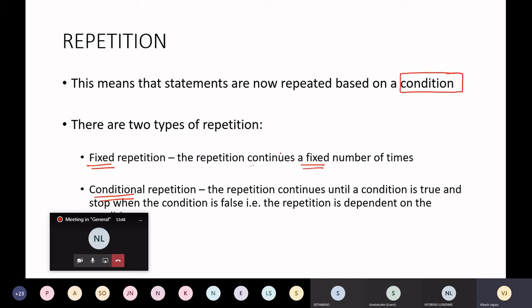In other words, it will repeat 10 times, it'll repeat three times, it'll repeat five times. Conditional repetition—you don't know how many times it's going to repeat. It just depends on when the condition fails. So that's conditional repetition.